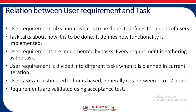The relation between the user requirement and the task: the user requirement talks about what is to be done and defines the need of the user, while the task talks about how it is to be done and defines how the functionality is implemented. User requirements are implemented by tasks. Every requirement is gathered as a task, and user requirements are divided into different tasks planned in the current iteration. User tasks are estimated on an hours basis, generally between 2 to 12 hours.